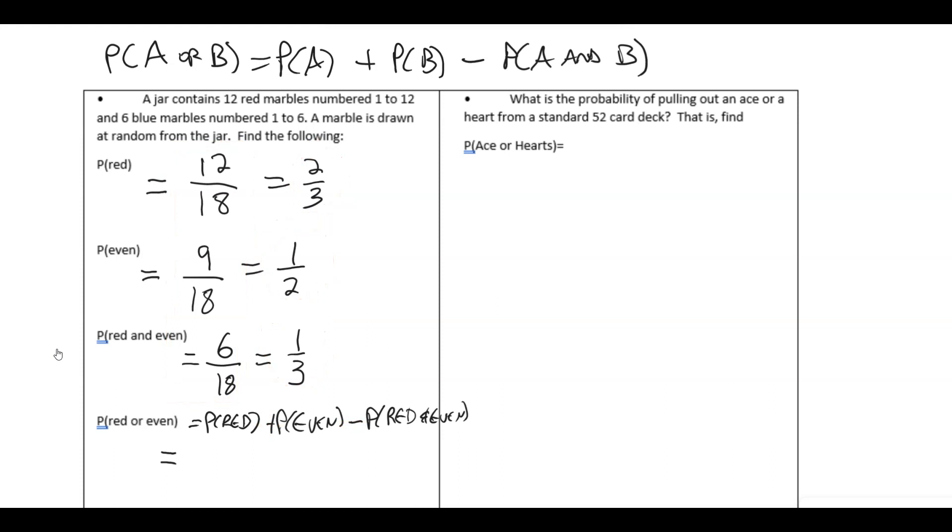I'm going to go back to the 12 eighteenths plus the 9 eighteenths minus the 6 eighteenths. This gives us 15 eighteenths. And then reducing that, five-sixths.